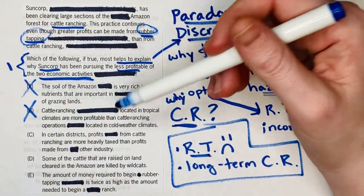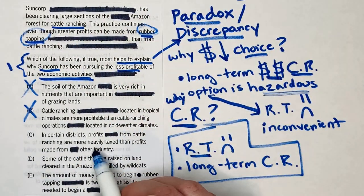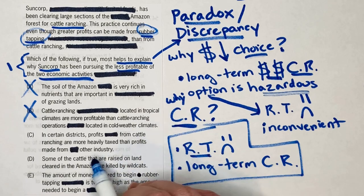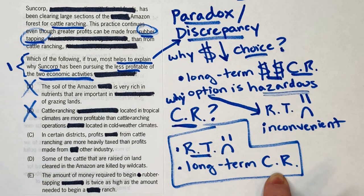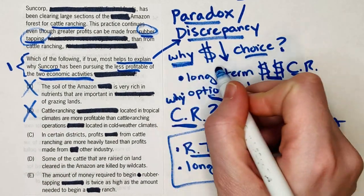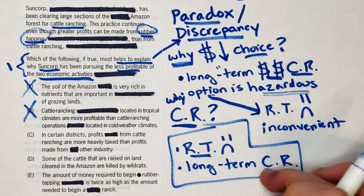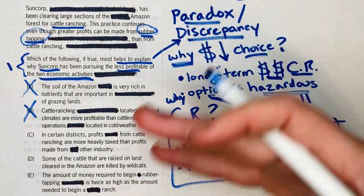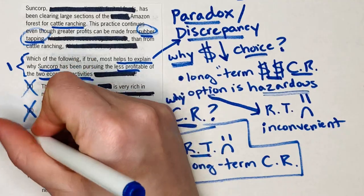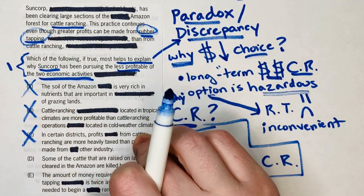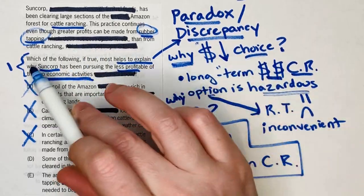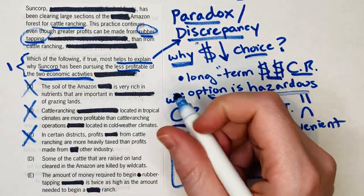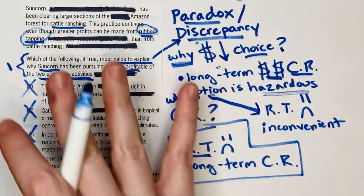Answer C says that in certain districts, profits from cattle ranching are more heavily taxed than profits from other industries. That just seems like cattle ranching is an even worse idea — it's not explaining why they're choosing it. C would be tempting if you got confused about what your job was here, because it's vaguely on topic.